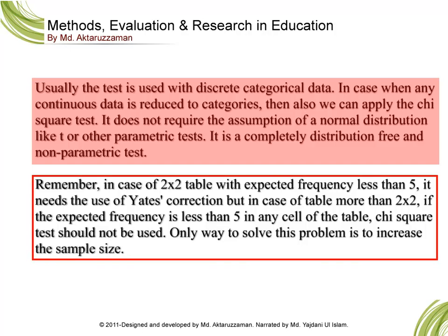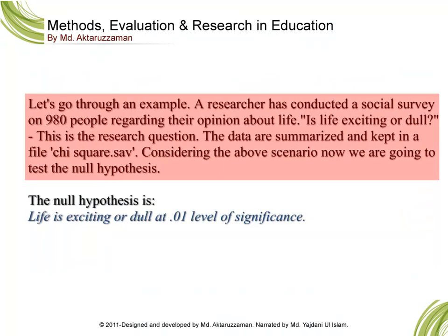Remember, in the case of a 2×2 table with expected frequency less than 5, it needs the use of Yates correction. But in the case of a table larger than 2×2, if the expected frequency is less than 5 in any cell, the chi-square test should not be used. The only way to solve this problem is to increase the sample size.